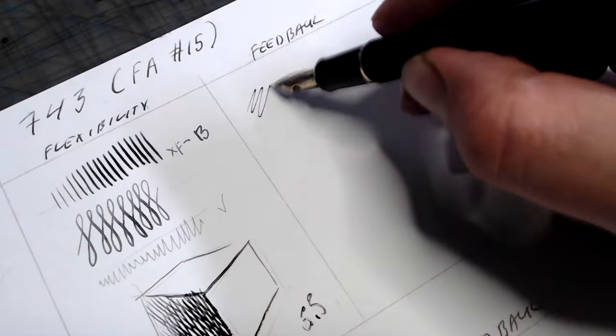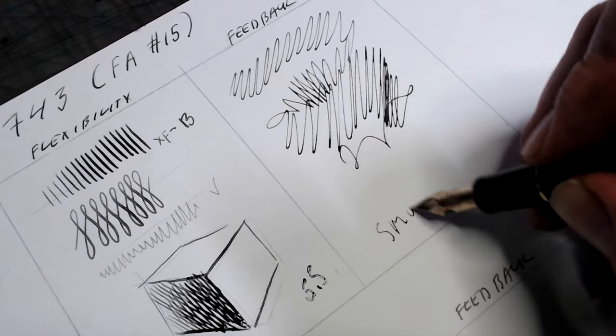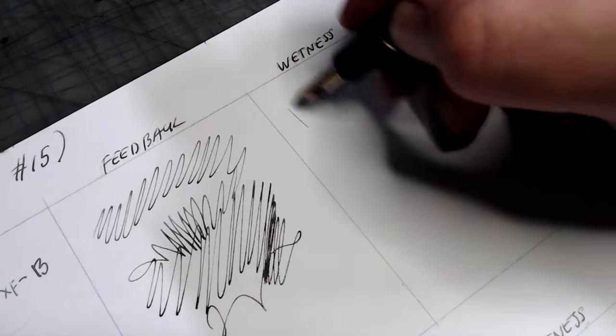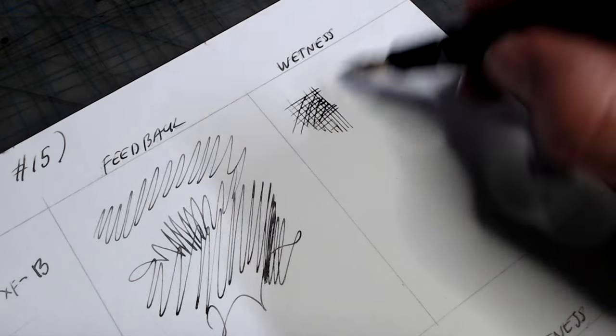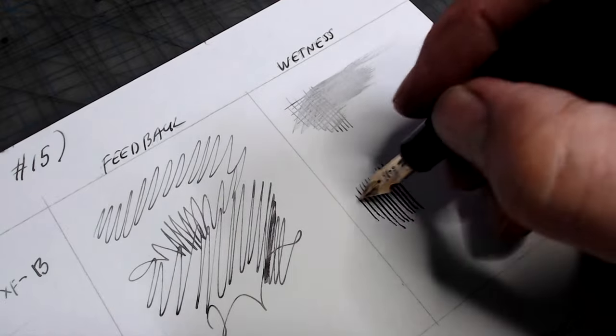In the feedback test, this one is quite smooth, about as smooth as you can get from a nib this fine. And in the wetness test, it puts down a semi-wet line, not nearly as wet as the Pilot 912 FA, or even the Pilot Falcon, making it much more suitable for a large variety of papers.